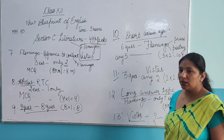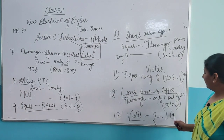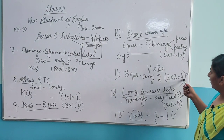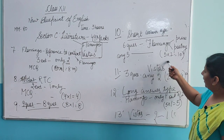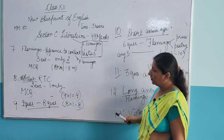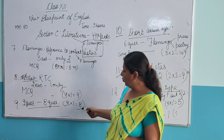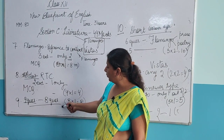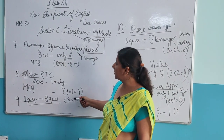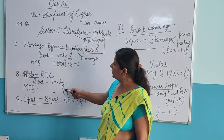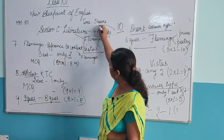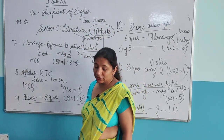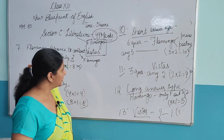Each long answer question is of 5 marks. Adding up: 5 and 5 is 10, and 10 and 4 is 14, and 14 and 10 is 24, and 24 and 8 is 32, and 32 and 4 is 36, and 36 and 8 is 44. That completes our 44 marks for the complete literature section.